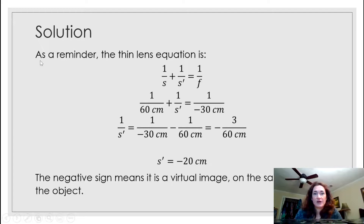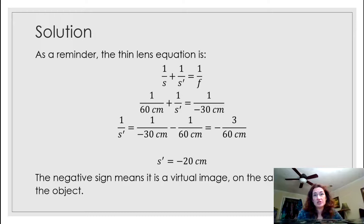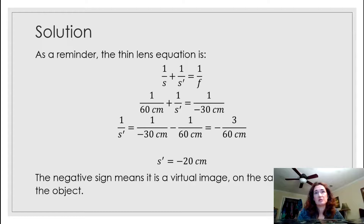Here's our thin lens equation from the last lecture — if you haven't watched that, you should go back and watch it. The equation is 1/S plus 1/S prime equals 1/F, where S is the object distance, S prime is the image distance, and F is the focal length. Plugging in our values: the object distance is 60 centimeters and the focal length is minus 30 centimeters, so we have 1/60 cm plus 1/S prime equals negative 1/30 cm.